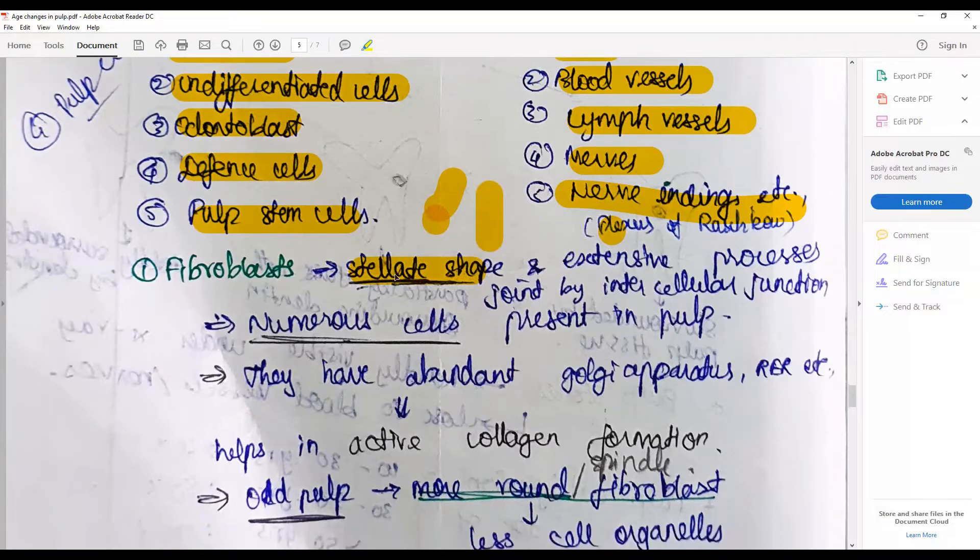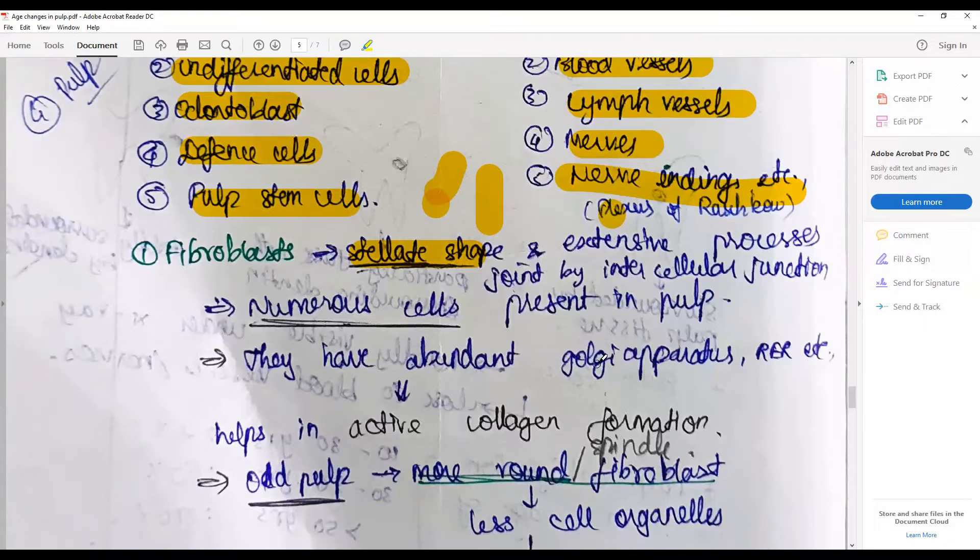But when tissue processing happens, they are pulled apart and the extensive processes joined by intracellular junctions are retained, giving them a stellate shape. There are numerous fibroblasts present in the pulp.